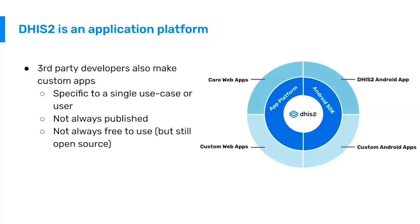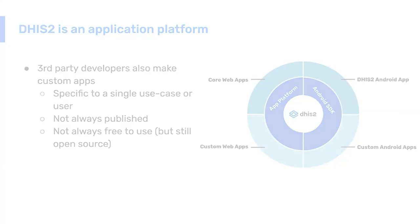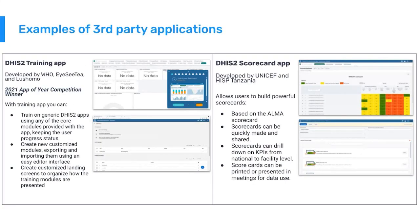Third-party applications are a big part of the DHIS2 ecosystem. The 30 core applications that the University of Oslo produces are not always suitable to every context. Many countries require specialized tools for different projects, different kinds of clinical services, and different types of end users.